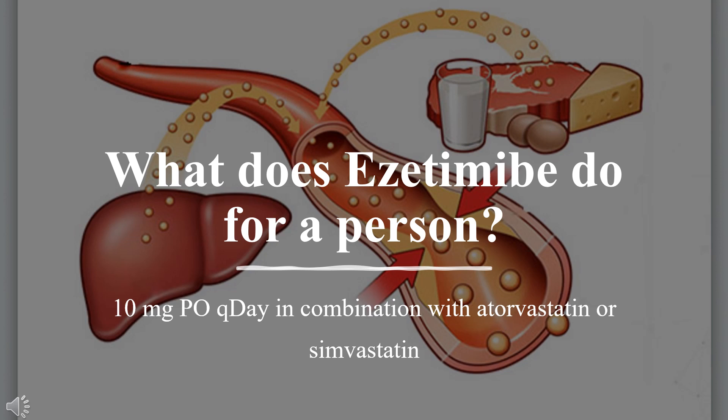Dosing: Homozygous familial hypercholesterolemia — 10 mg PO once daily in combination with atorvastatin or simvastatin. Homozygous sitosterolemia — 10 mg PO once daily adjunctive to diet. Primary hyperlipidemia — 10 mg PO once daily in combination with HMG-CoA reductase inhibitors, adjunctive to diet.